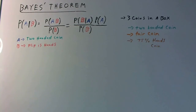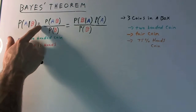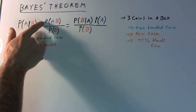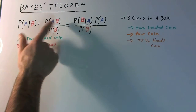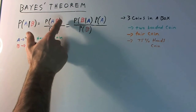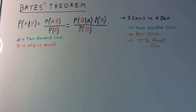Just reiterating Bayes Theorem: the probability of A given B is going to be equal to the probability of A and B divided by the probability of the given. And since they're not independent, we have to expand the numerator by saying that the probability of A and B is equal to the probability of B given A times the probability of A, and that is still divided by the probability of the given.